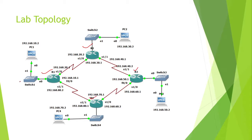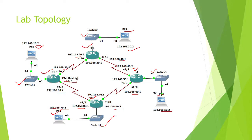I have configured Router 1, 2, 3, and 4 with Switch 1, 2, 3, and 4. I have also taken four PCs: PC1 has IP 10.2, PC2 is 30.2, PC3 is 50.2, and PC4 is 70.2. The serial ports are configured with 20.2/20.1, 40.2/40.1, 60.1/60.2, and 80.1/80.2. The FastEthernet ports are 10.1, 30.1, 50.1, and 70.1.